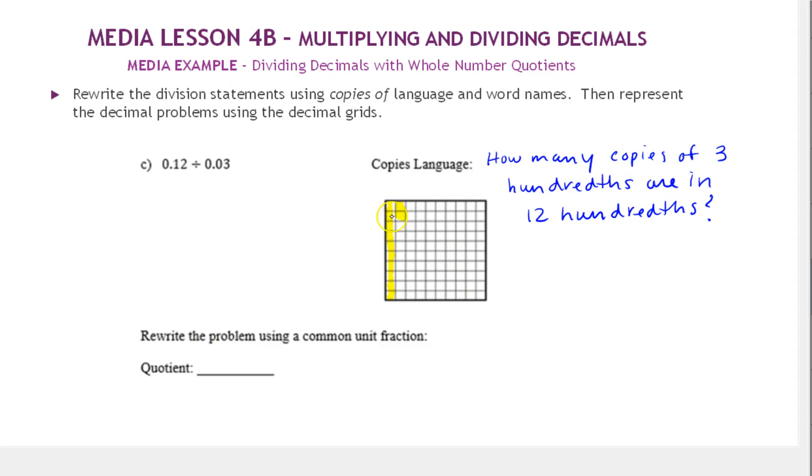So notice this is essentially we're taking 12 of something, they happen to be hundredths, and seeing how many copies of 3 of that same something, hundredths, are in here. So let's see, I think I'll use a red pen for this one. Here's 1 copy of 3 hundredths, 2 copies, 3 copies, and there's the 4th copy. So again, our quotient is 4.